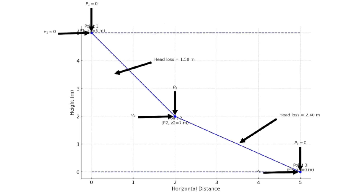First, understand the principle of a siphon. The siphon is a tube that allows liquid to flow from a higher elevation to a lower elevation, even over an intermediate higher point, driven by gravitational potential energy. The siphon effect occurs because the pressure at the top of the siphon is lower than the pressure at the liquid surface of the reservoir, creating a continuous flow.